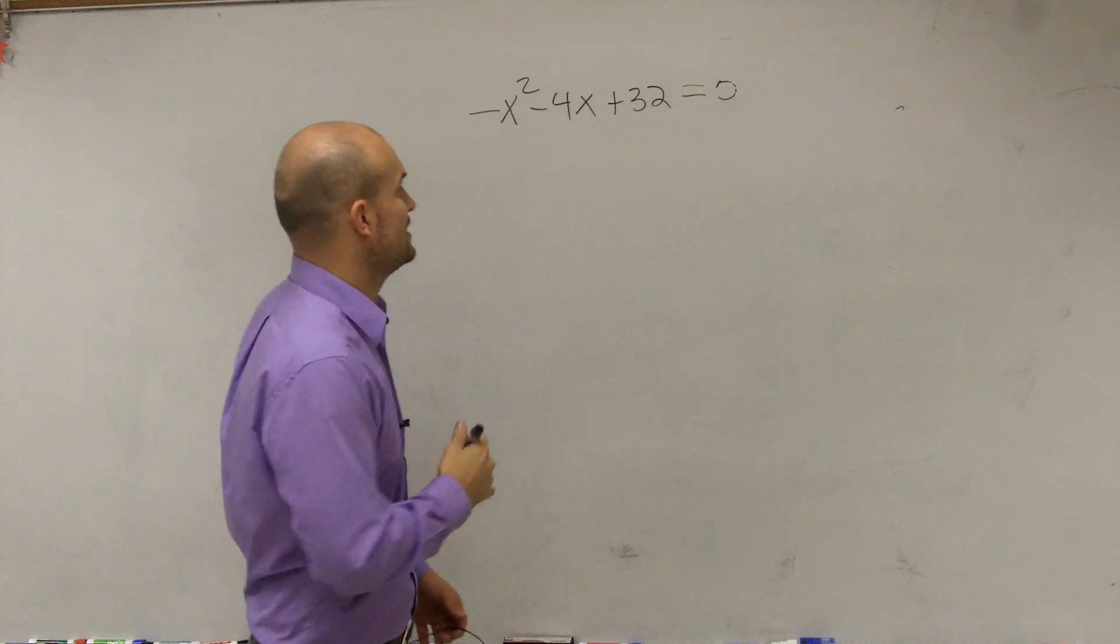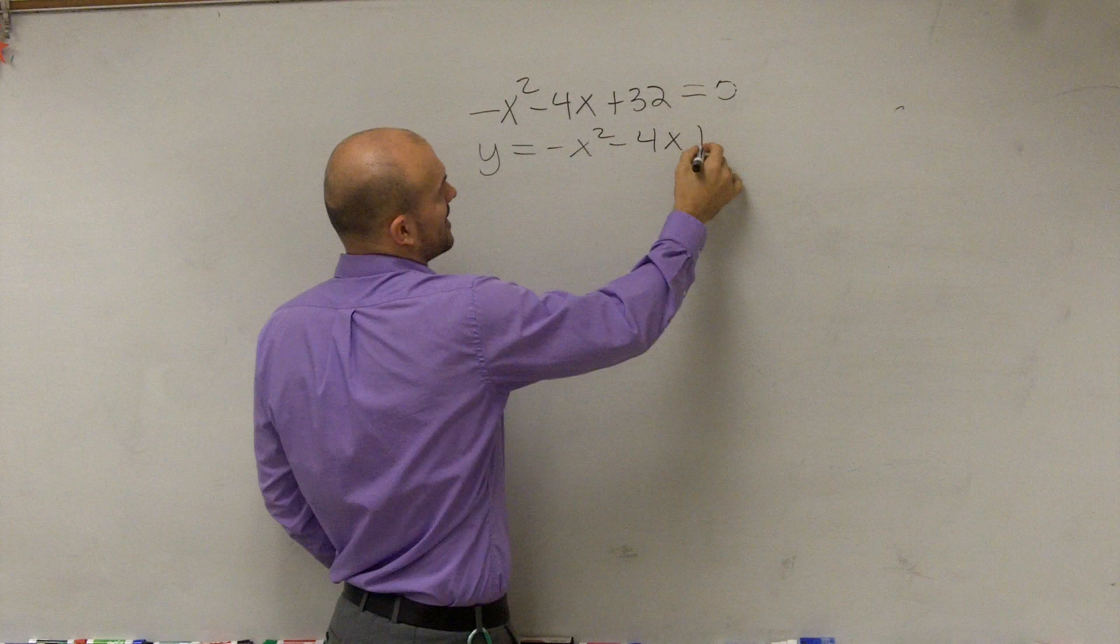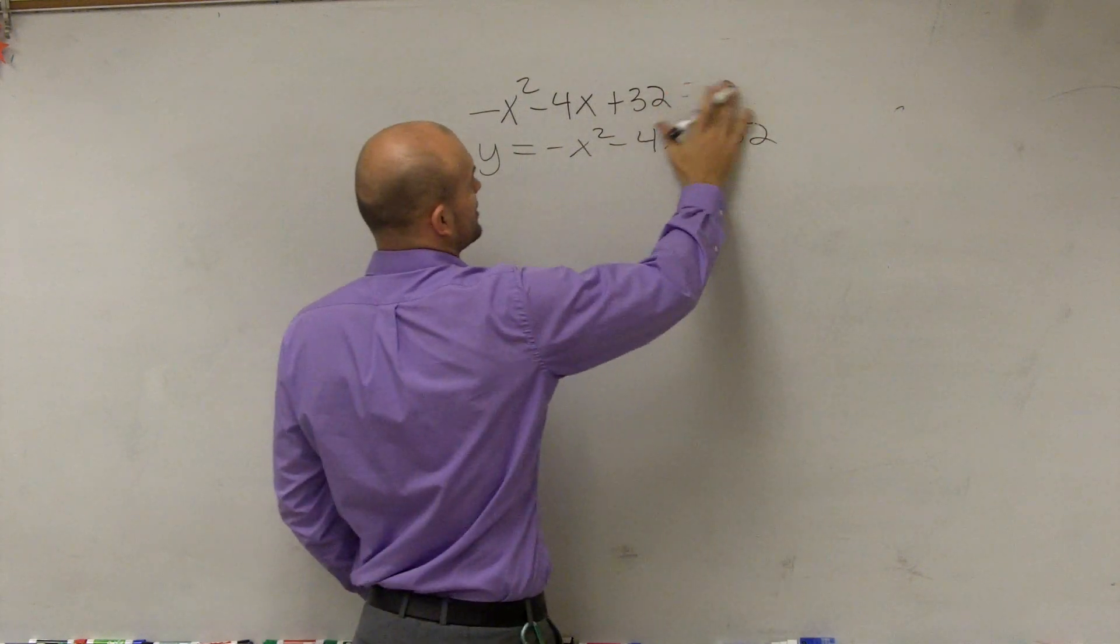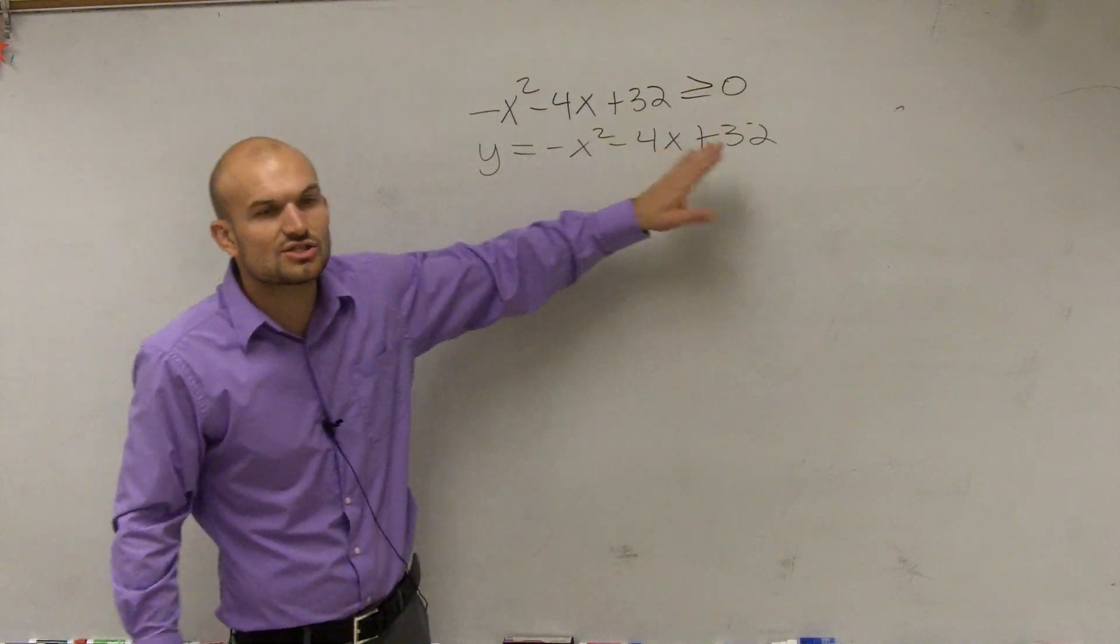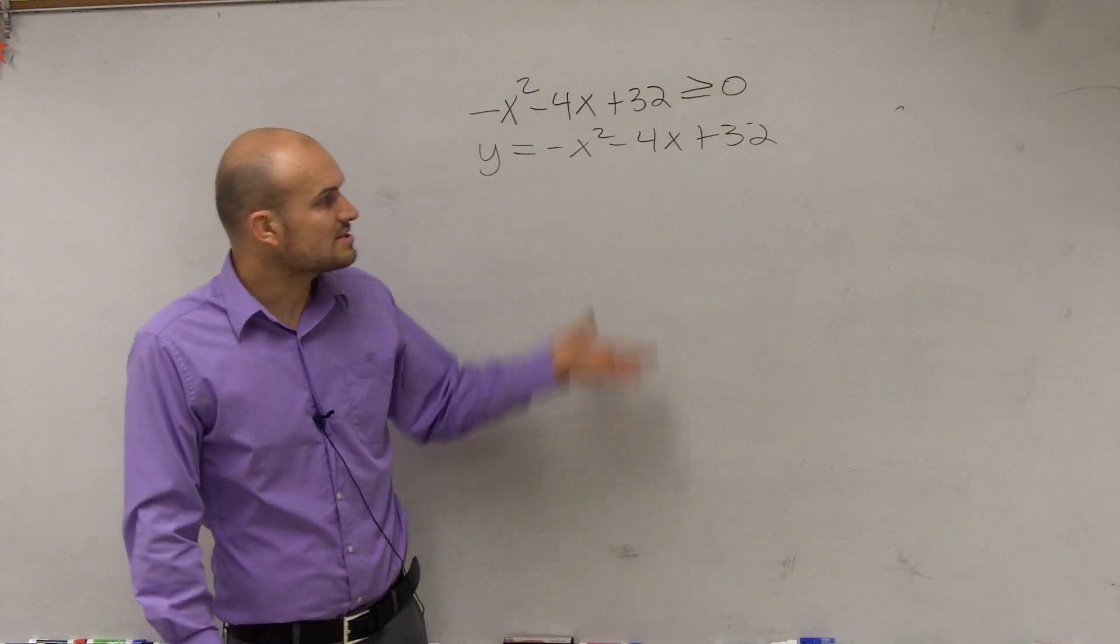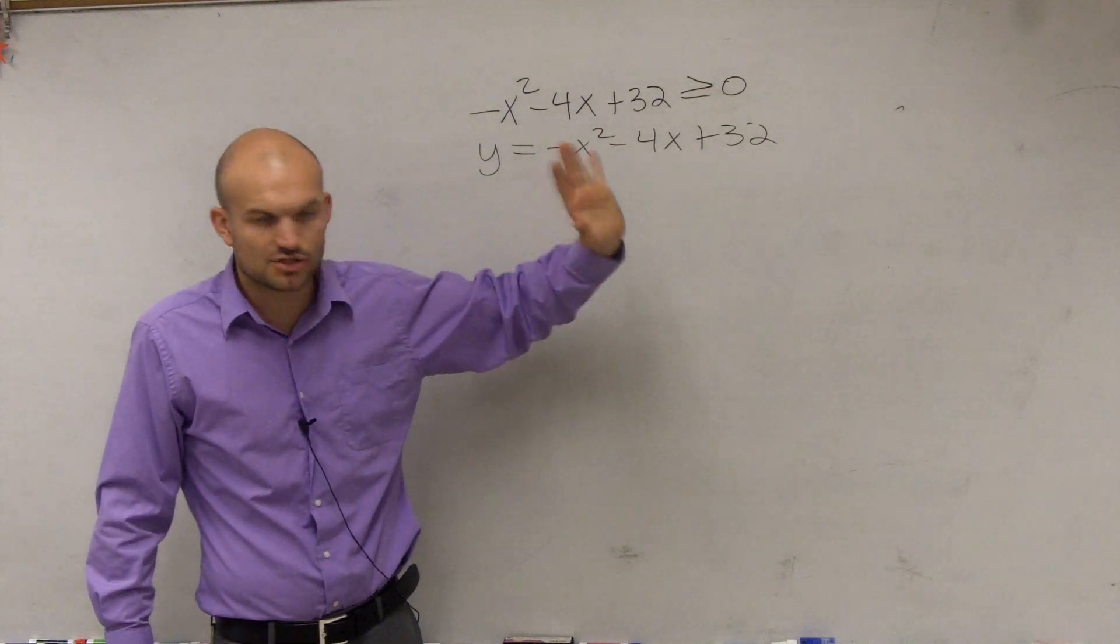How would I graph this inequality? If let's say I wanted to use it as a function, y equals negative x squared minus 4x plus 32. Let's forget about the solving part. Actually, I'll just leave the inequality there. It was less than or equal to 0, right? But let's just solve it as a function. Let's just see what this graph is going to look like. So the first thing I do is I'm just going to rewrite it as a function or as an equation and just go from there.